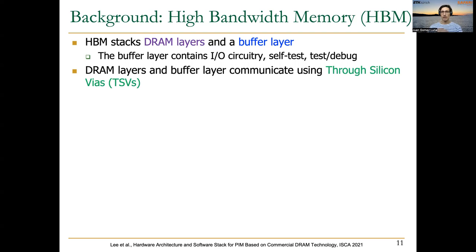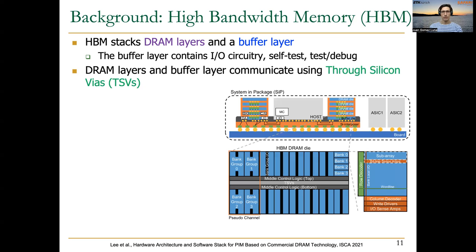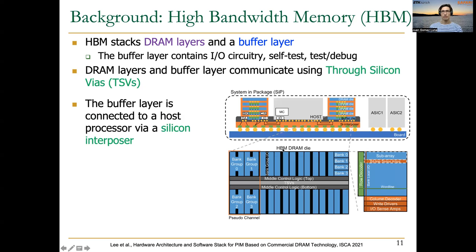Basically, HBM stacks on top of each other different layers and a buffer layer, and they communicate using lines or wires called through-silicon vias or TSVs. In this figure, you can see two stacks or two cubes of HBM memory at both sides of the host, either a CPU or a GPU, and you can also identify the different DRAM layers or dies. They are connected to the buffer die using these through-silicon vias, and then the buffer die is connected to the host through a silicon interposer.